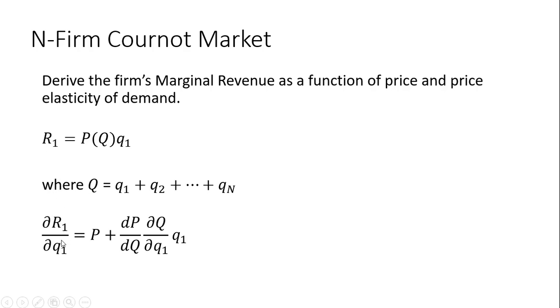To get marginal revenue, we take the partial derivative of the revenue function with respect to firm 1's output. We get ∂R₁/∂q₁ = P + (dP/dQ)(∂Q/∂q₁)q₁. This is the marginal revenue of firm 1.